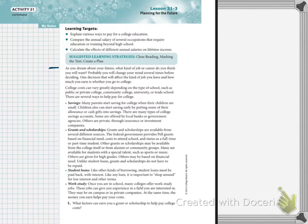There are grants and scholarships. So a grant or a scholarship is a little bit different than savings. Grants and scholarships are available from many different sources. The federal government provides Pell grants based on financial need, cost to attend school, and the status as a full-time or part-time student. So full-time, I believe, is considered 12 hours, and part-time is less than 12 hours.